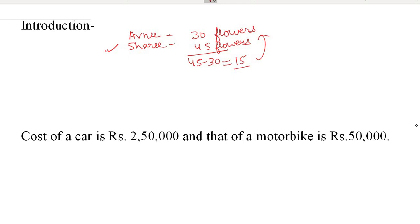We may say that the height of Rahim is 150 cm and the height of Avni is 140 cm. Then we may say that the height of Rahim is 150 minus 140, that is 10 cm more than Avni. This is one way of comparing — by taking the difference.